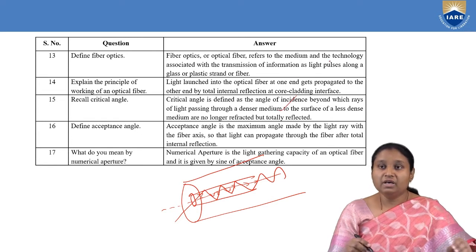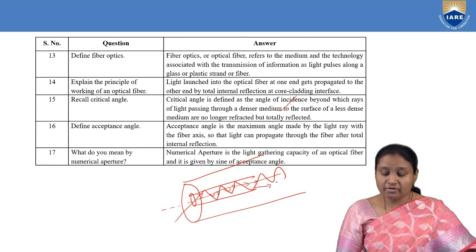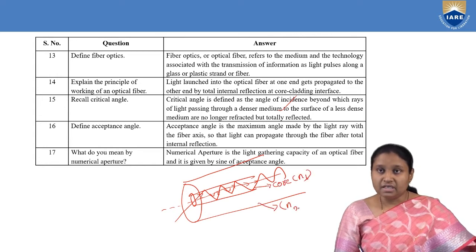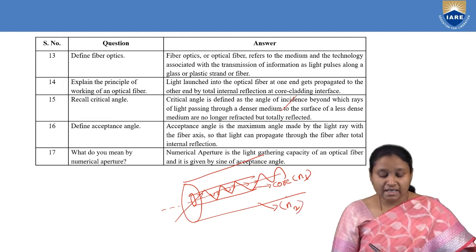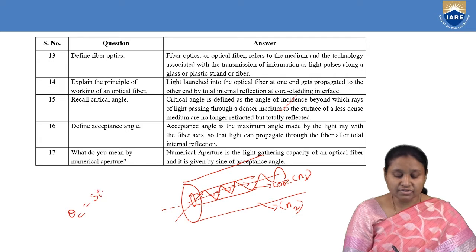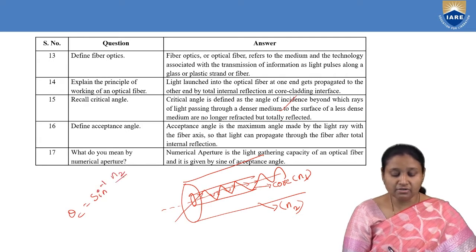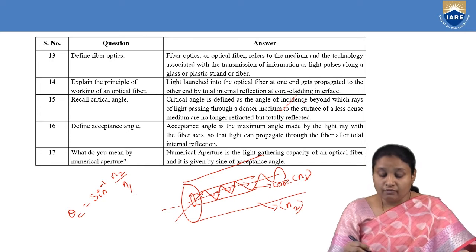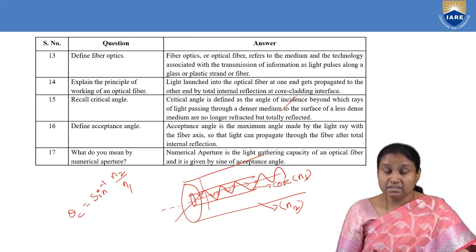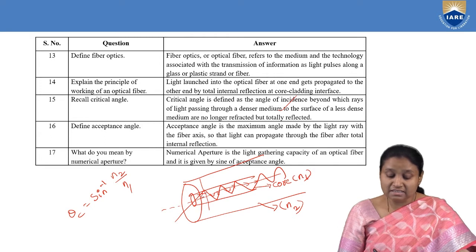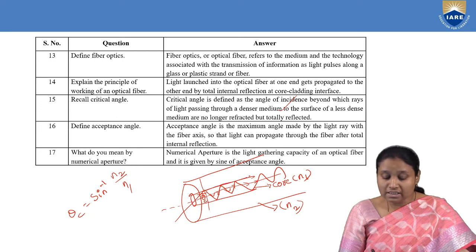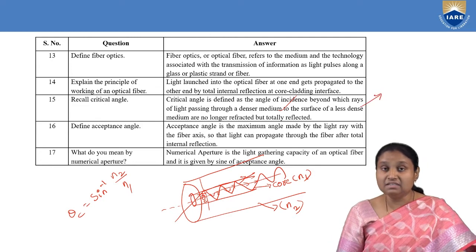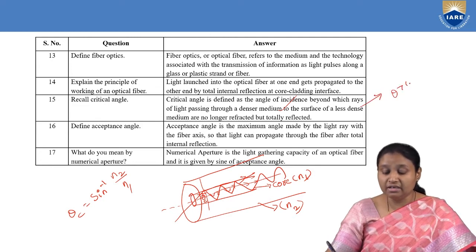Recall the critical angle. If the core refractive index is N1 and the cladding refractive index is N2, the critical angle is given as sin-inverse of the ratio of the refractive index of cladding to the refractive index of the core. When light is incident on the core-cladding interface at an angle equal to theta-c, the light ray moves along the interface. For total internal reflection, the internal incidence angle must be greater than the critical angle.